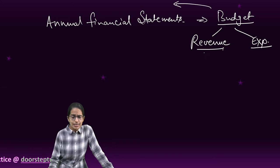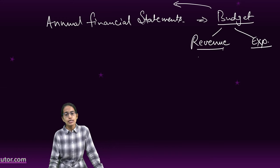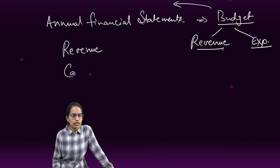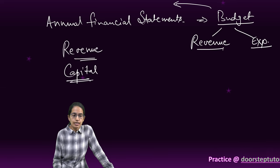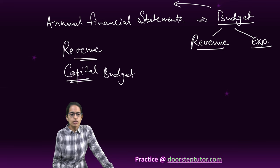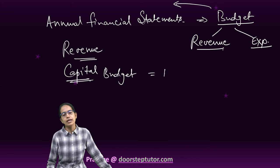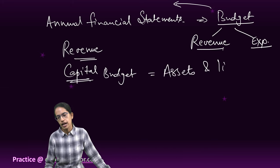The budget is laid down as part of the annual financial statement from the financial year of 1st April to 31st March. There can be revenue assets and capital assets — so two types of assets. The capital budget includes the assets and the liabilities, while the revenue budget relates only to the current financial year.